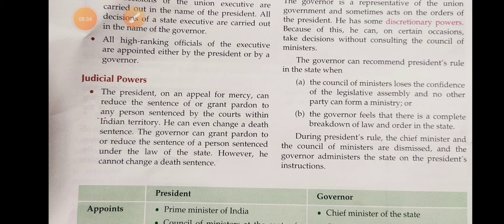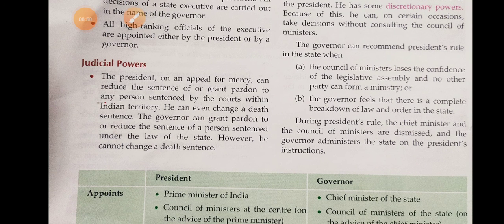What are the discretionary powers of the Governor? The Governor is a representative of the union government and has some discretionary powers. The Governor can recommend President's Rule in the state in two situations: when the Council of Ministers loses the confidence of the Legislative Assembly and no other party can form a ministry, or when the Governor feels there is a complete breakdown of law and order in the state.